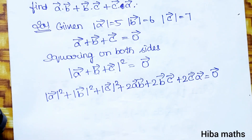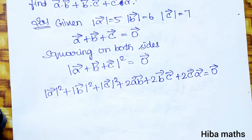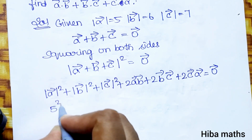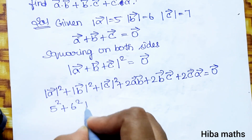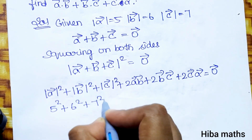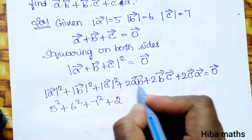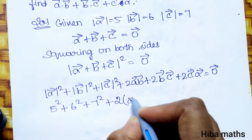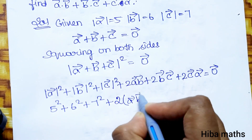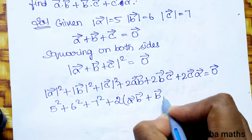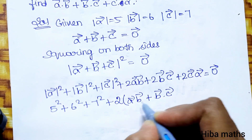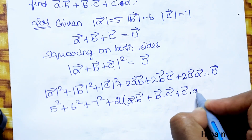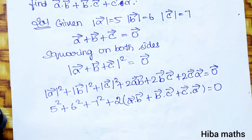Now substituting the values: 5 squared plus 6 squared plus 7 squared plus 2 times (a vector dot b vector plus b vector dot c vector plus c vector dot a vector) is equal to zero.